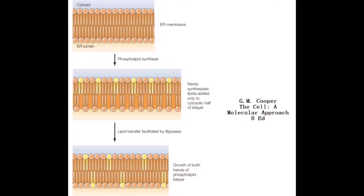By catalyzing the rapid translocation of phospholipids across the endoplasmic reticular membrane, the flippases ensure even growth of both halves of the bilayer.